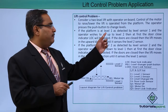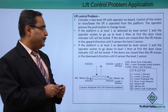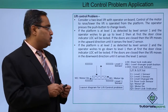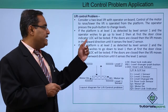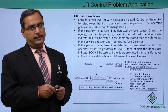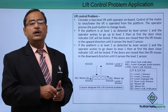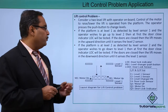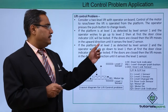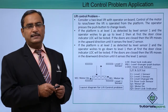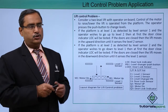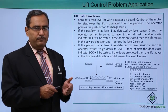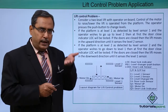If the platform is at level one, as detected by level sensor one, and the operator wishes to go up to level two, then first the door close indicator (LOC) will be tested, because a lift cannot move when the doors are open. If the doors are closed, then the lift moves in the upward direction until it is sensed by the level two sensor.